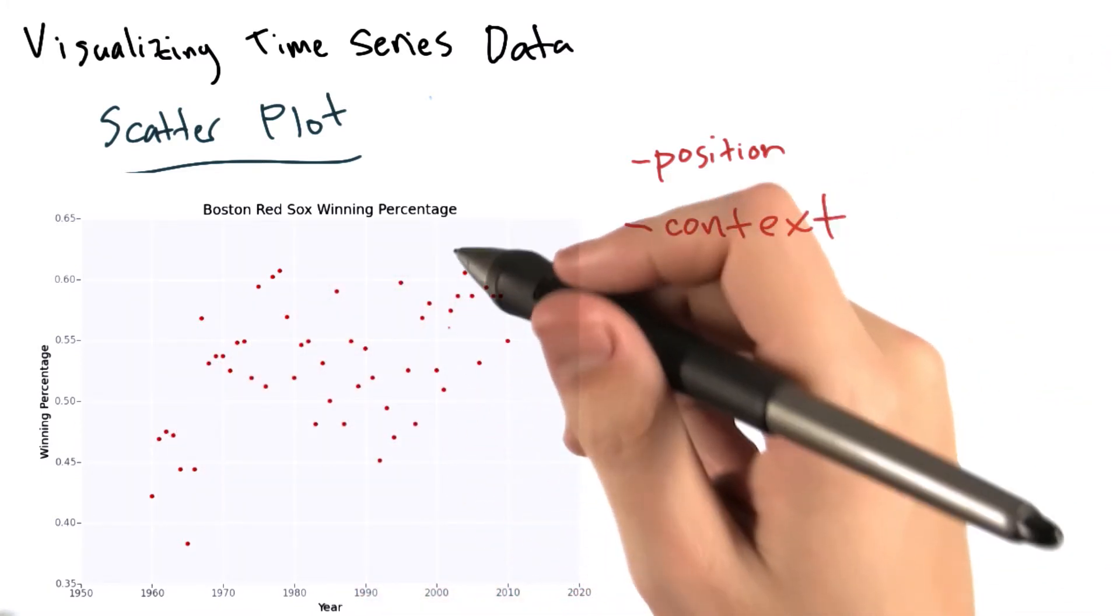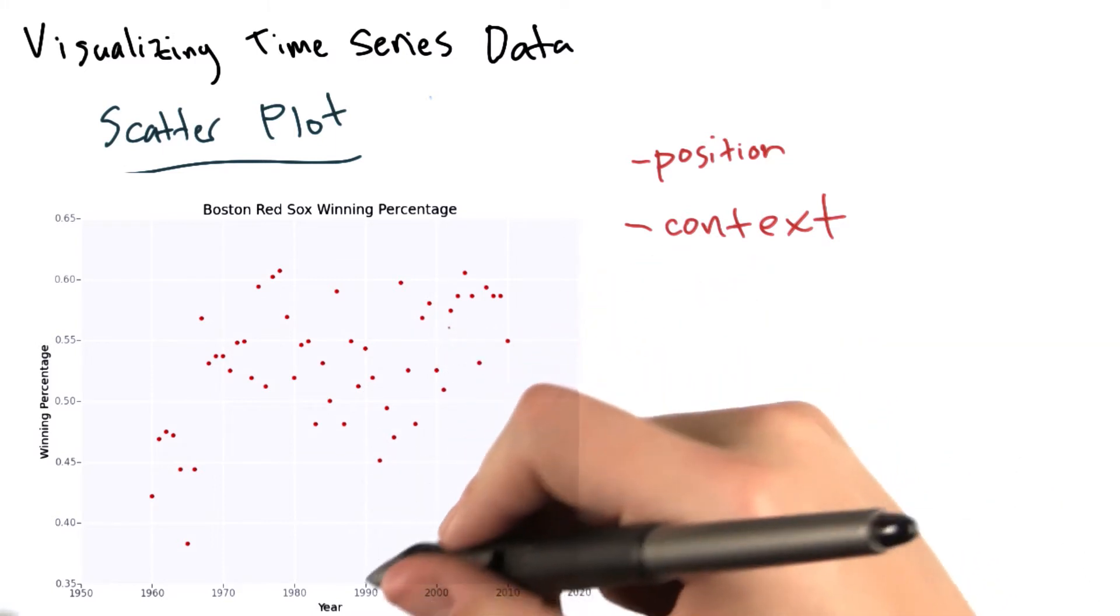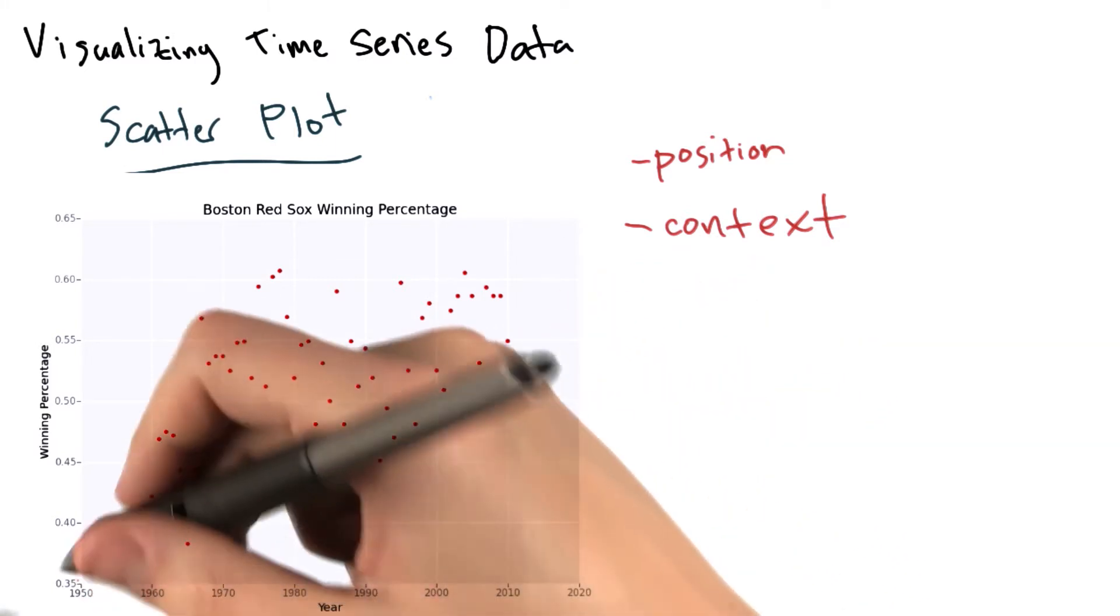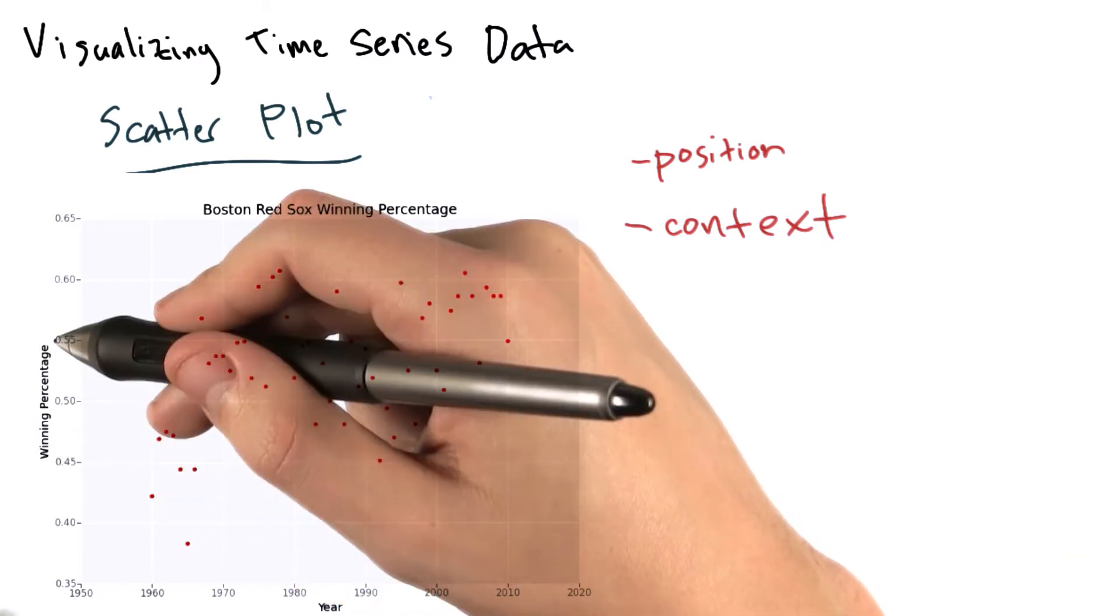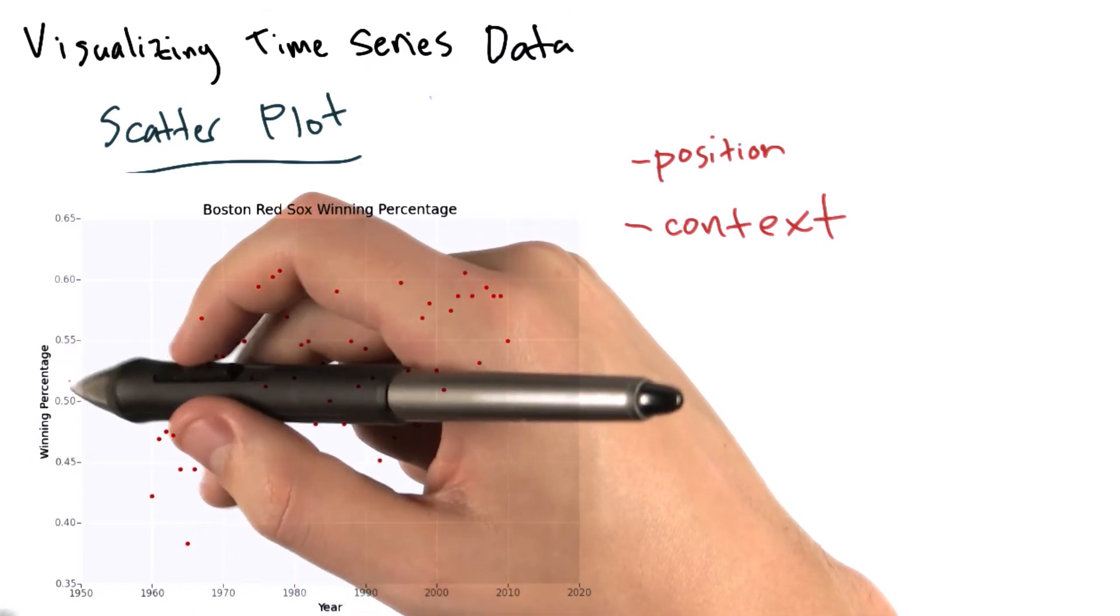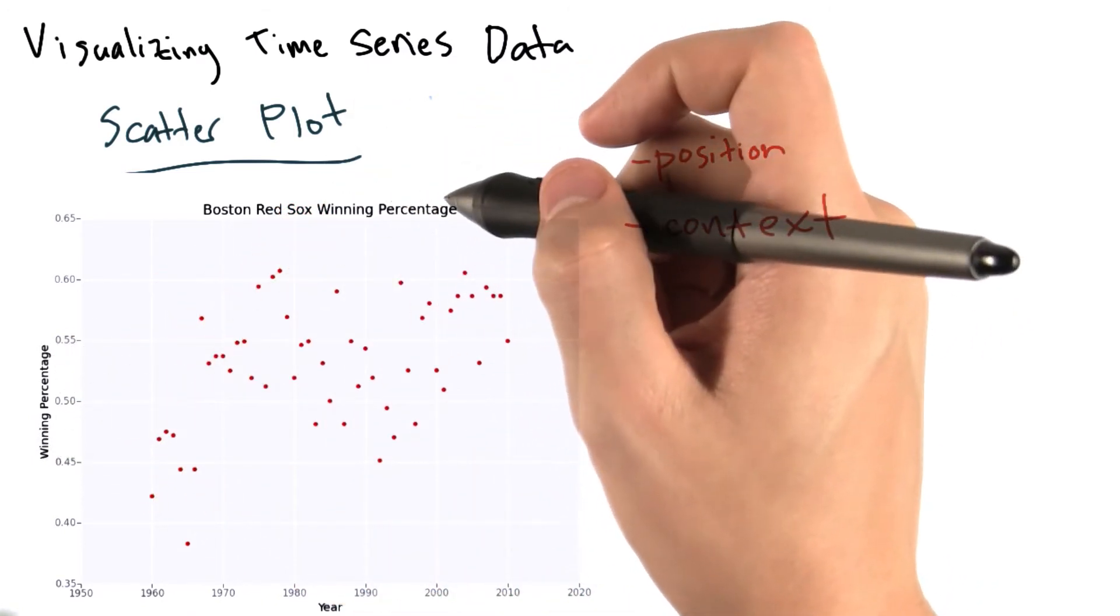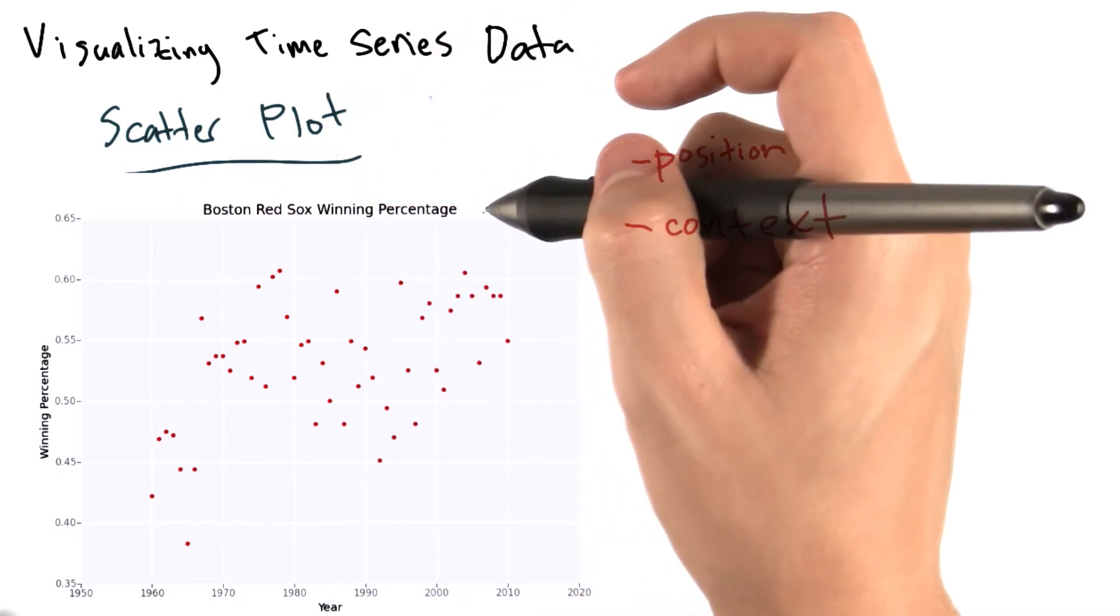Secondly, we can note that this plot provides pretty good context. We have an x-label, year, indicating what the x-axis represents, a y-label, winning percentage, telling us what the y-axis represents, and we have a pretty descriptive title, Boston Red Sox winning percentage.